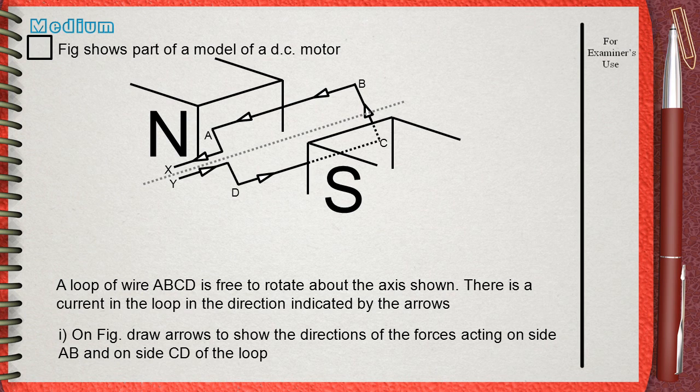Let's start with side AB. As you need to know where is the motion direction, you need Fleming's left hand rule.